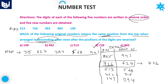Option D is the right answer. Here 865 does not correspond to 568, 513 does not correspond to 315, 492 does not correspond to 294, and 149 does not correspond to 941. So 726 is the original number which retains the same position even after the digits are reversed and they are arranged in descending order. Option D is the right answer.